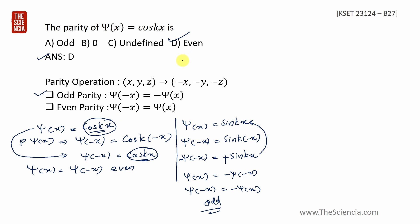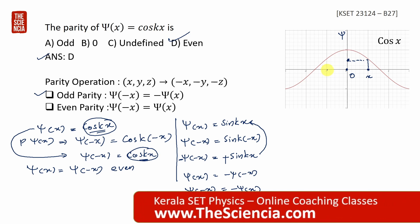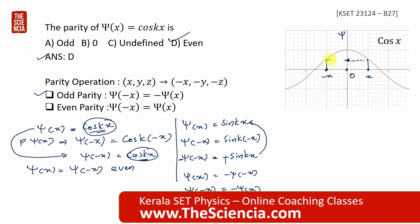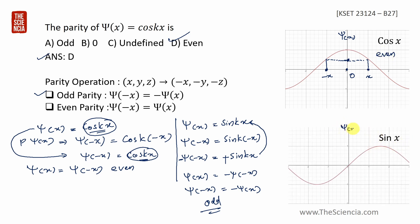Cos is even parity. If we have a graph of ψ(x) = cos(kx), and we invert x to −x, the function value remains the same — the graph is symmetric about the y-axis. In case of odd parity, ψ(−x) gives the negative of ψ(x), the two functions are mirror images with opposite signs.